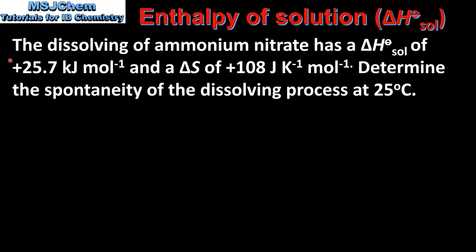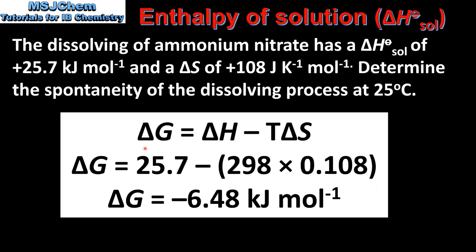We'll end the video by looking at a quick example. The dissolving of ammonium nitrate has an enthalpy change of solution of positive 25.7 kJ per mole and a change in entropy of positive 108 J per kelvin mole. Determine the spontaneity of the dissolving process at 25°C. Using the equation ΔG = ΔH − TΔS and inputting the values gives a ΔG value of negative 6.48 kJ per mole. Since ΔG is negative, the reaction is spontaneous at 25°C. This shows that despite having an endothermic enthalpy change of solution, the dissolving of ammonium nitrate is spontaneous at this temperature, due to the increase in entropy as the solid dissolves in water to form aqueous ions.